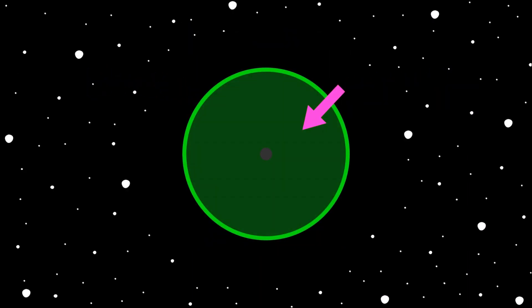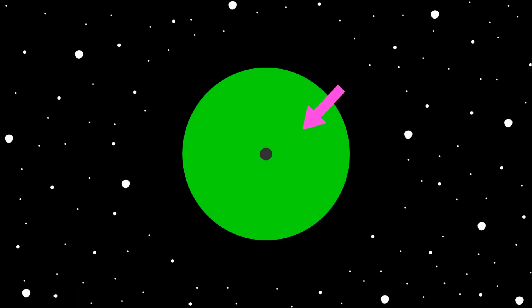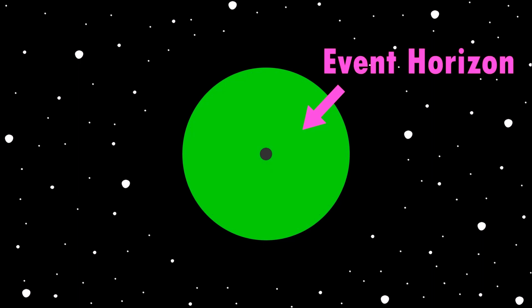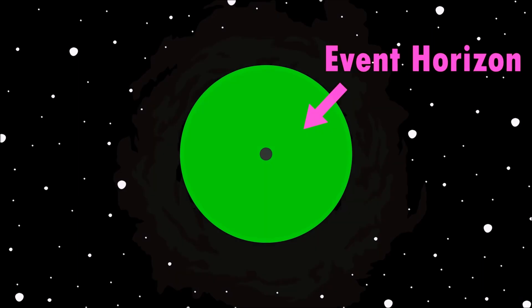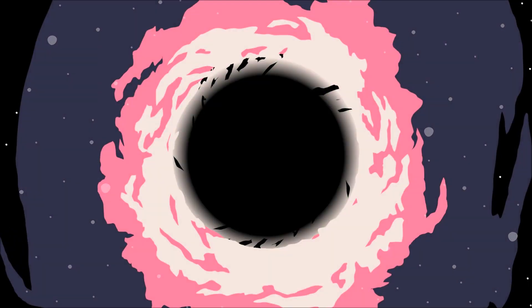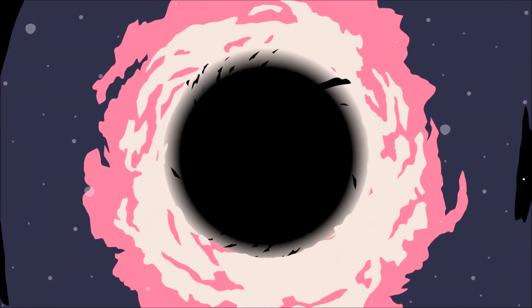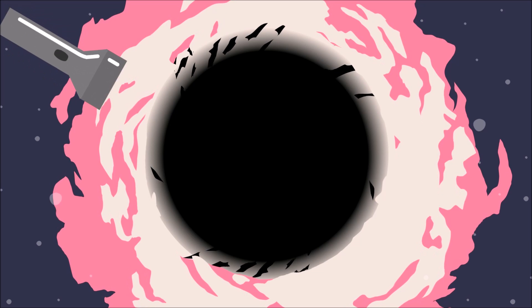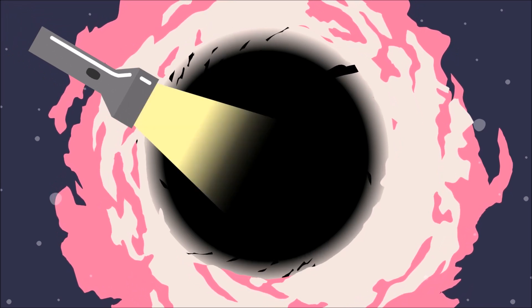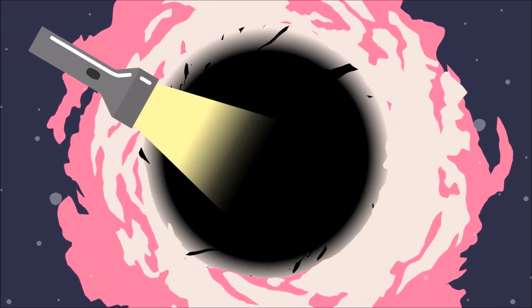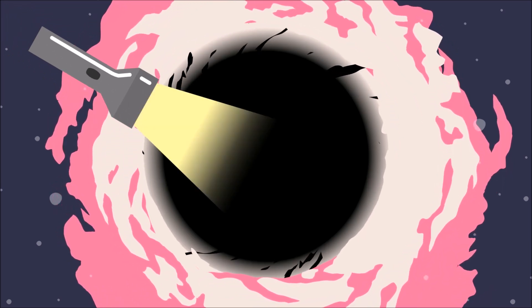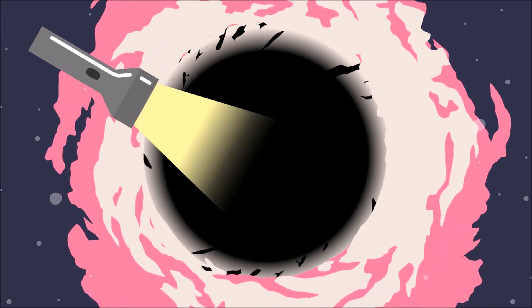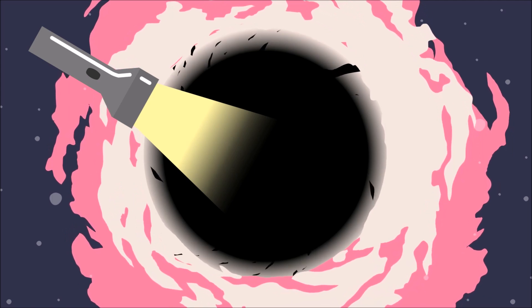The area surrounding the singularity is called the event horizon. Nothing that enters the event horizon can escape — not even light! Because light gets absorbed, we cannot actually see inside a black hole.